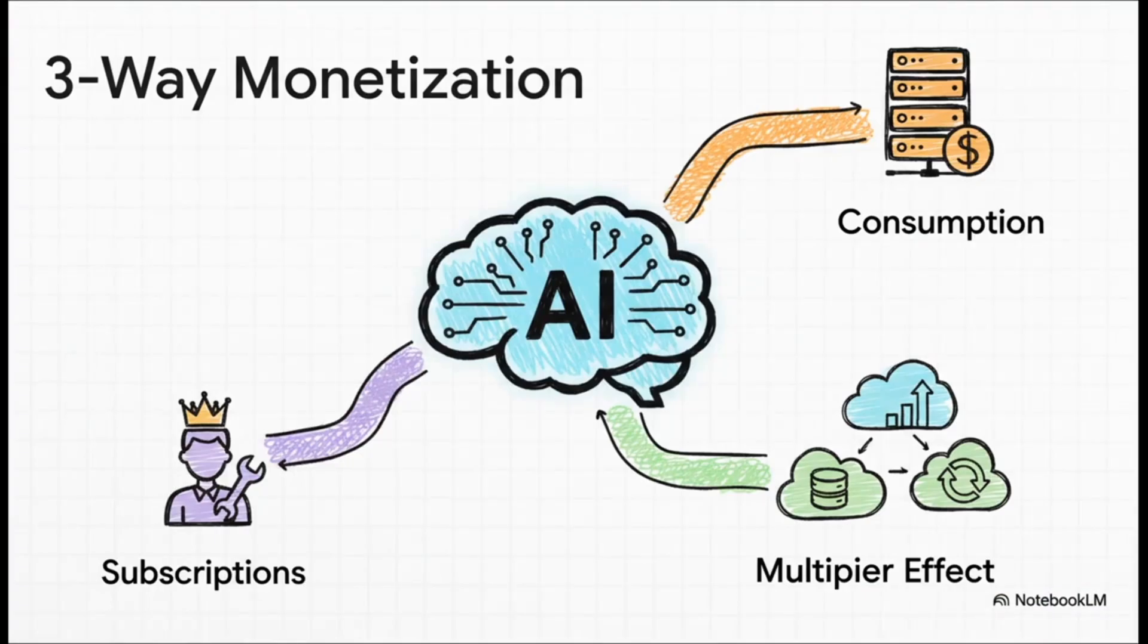And the crucial thing to understand is that Alphabet has so many ways to cash in. It sells AI compute on Google Cloud. It benefits from this multiplier effect, where using its AI makes you spend more on its other cloud services. And yeah, of course, it can still offer premium subscription tiers for the power users. AI isn't just one product. It's a catalyst that makes the whole machine run faster and more profitably.